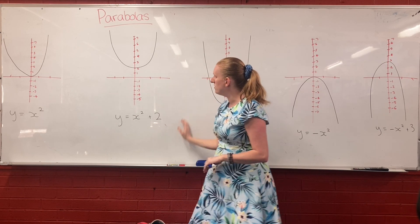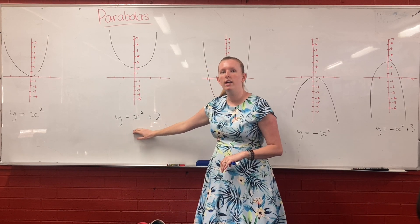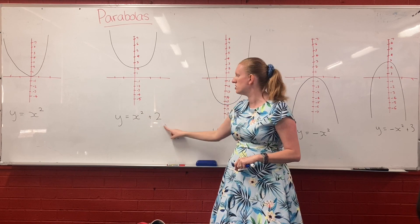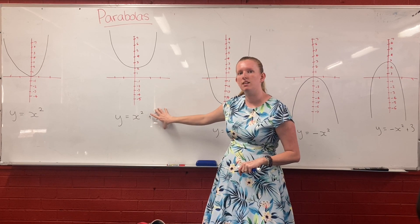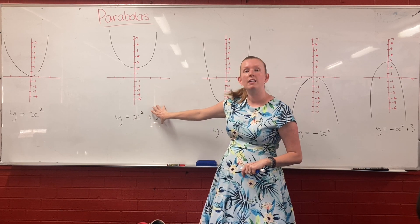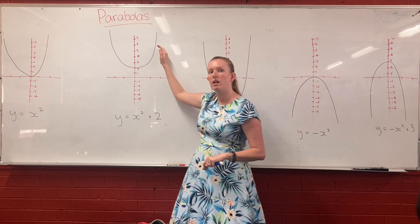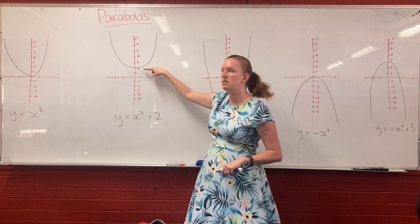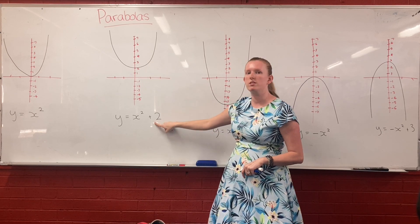So the equation for this parabola is y equals x squared plus 2. This number on the end here, which is our y-intercept, that tells us whereabouts on our y-axis our parabola is touching. So because this is positive 2, this is positive 2.